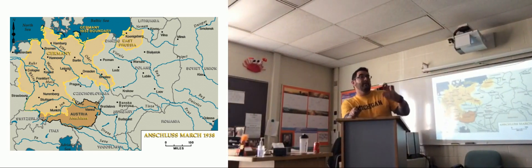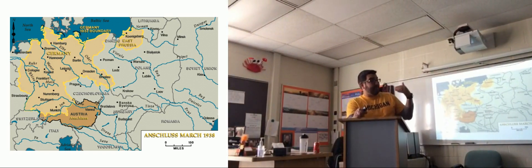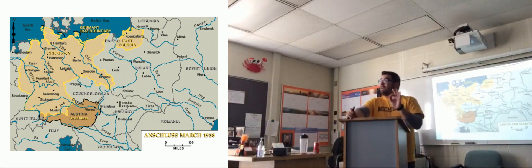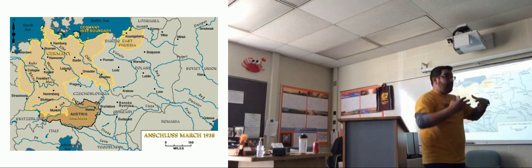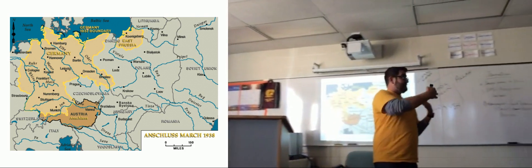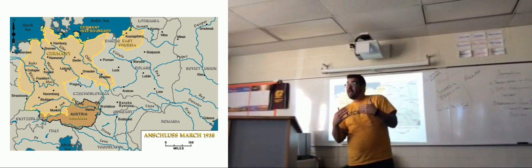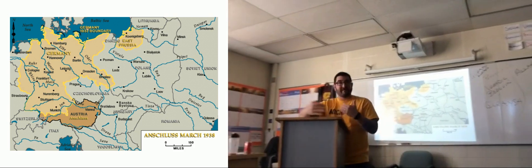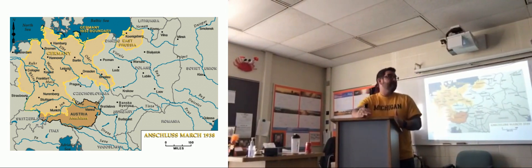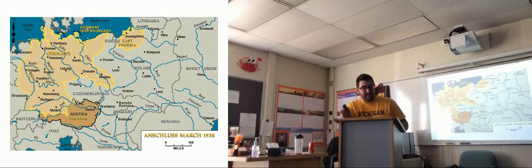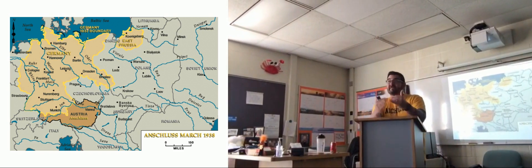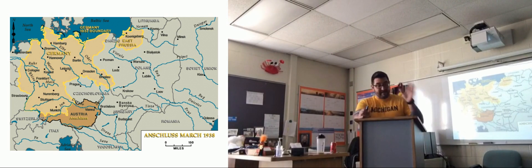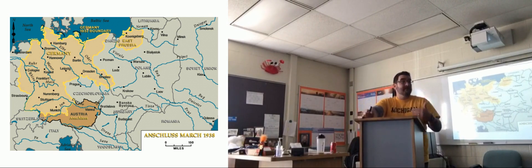We last talked about German steps through the 1930s up until 1937. We finished with the Hossbach Memorandum, which was a meeting where Adolf Hitler was with some of his top military and foreign policy advisors laying out desires to expand territory and acquire Lebensraum for their 85 million German-speaking people. What we're talking about today is the actual German expansion from 1938 into the beginning of World War II.